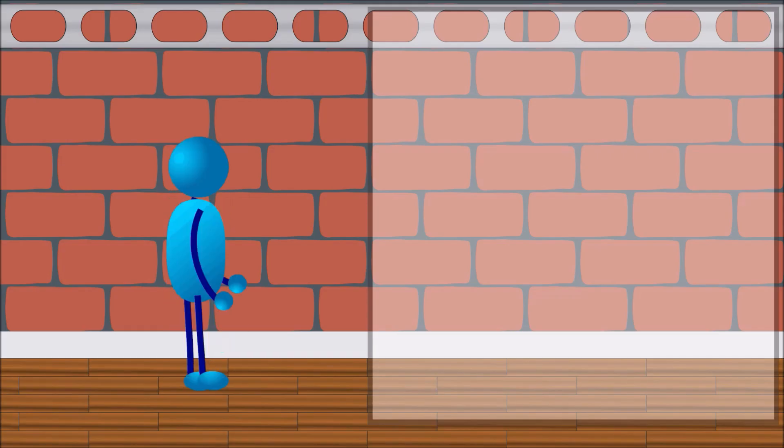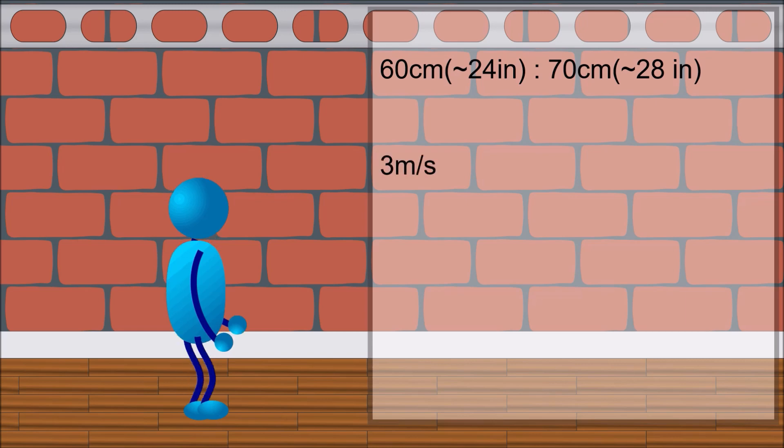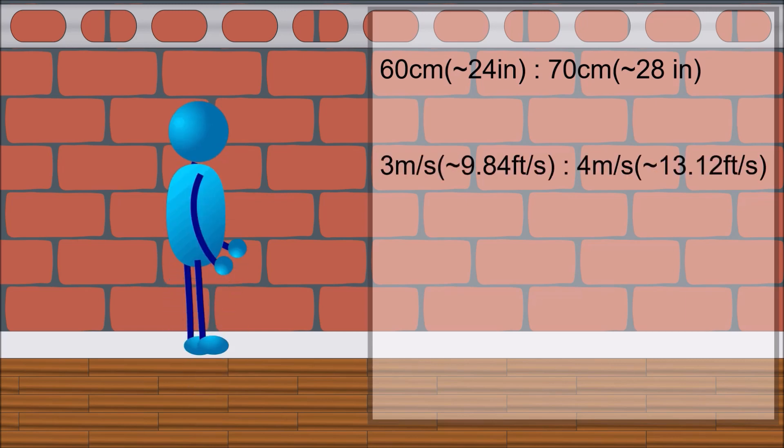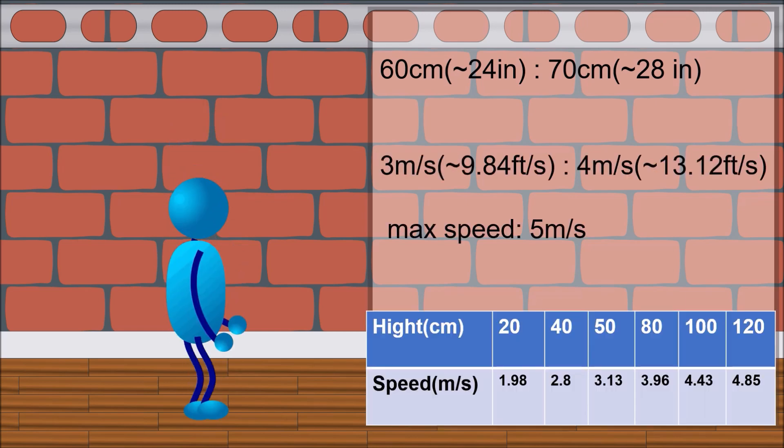An average person can jump vertically at maximum between 60 and 70 centimeters, which corresponds with a jumping speed of 3 to 4 meters per second. Even extreme athletes could jump at maximum with a speed of around 5 meters per second.